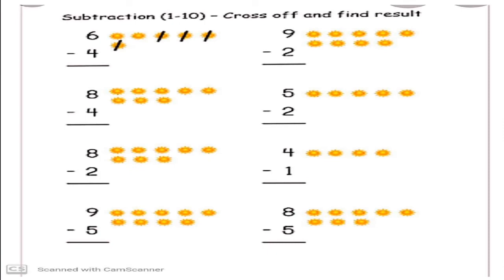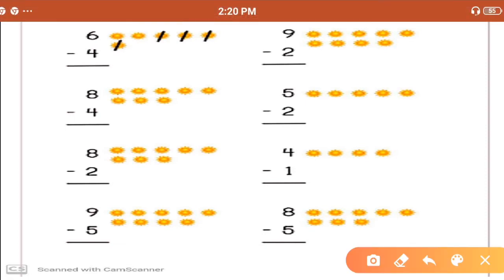Again, subtraction 1 to 10 — cross off and find the result. I hope after finishing this exercise, you will be able to count the subtraction without giving figures also. I'll teach you how to count without this type of figures. First, complete this exercise. Look at the first picture: 6 minus 4. They have already cut 4 numbers. Let's check how many are remaining: 1 and 2. So, 6 minus 4, we get 2.